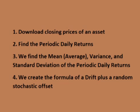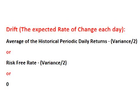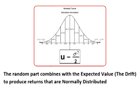To create a Monte Carlo simulator, we perform the following steps. We download the daily closing prices of an asset and find the periodic daily returns. We then create the formula of a drift plus a random stochastic offset. For the drift, we use the historical mean minus half the variance over time, or the risk-free rate minus half the variance over time, or we just use zero. For the random part, we use random percentages of the area under the curve that combine with the drift to produce theoretical future daily returns normally distributed around the drift.